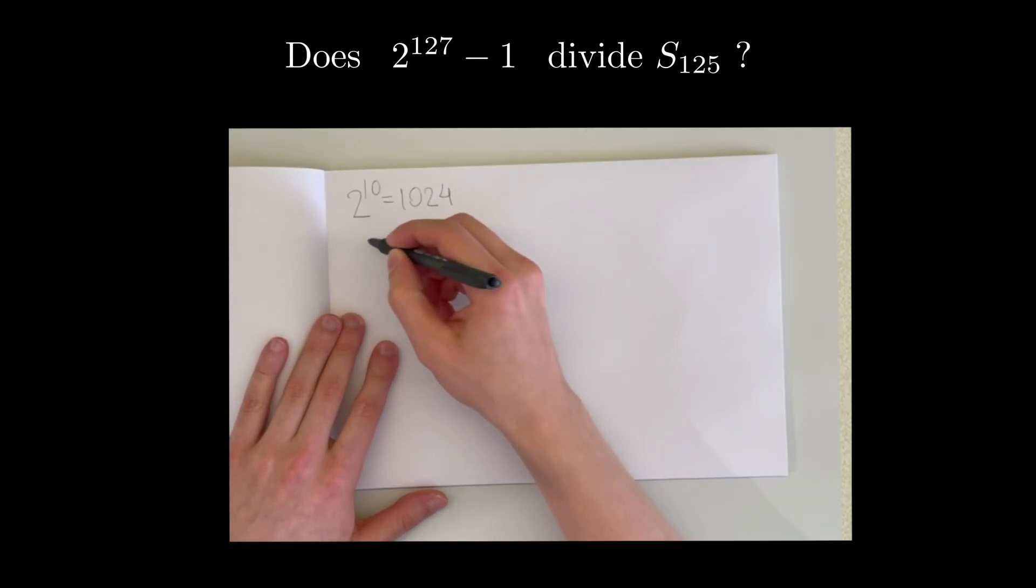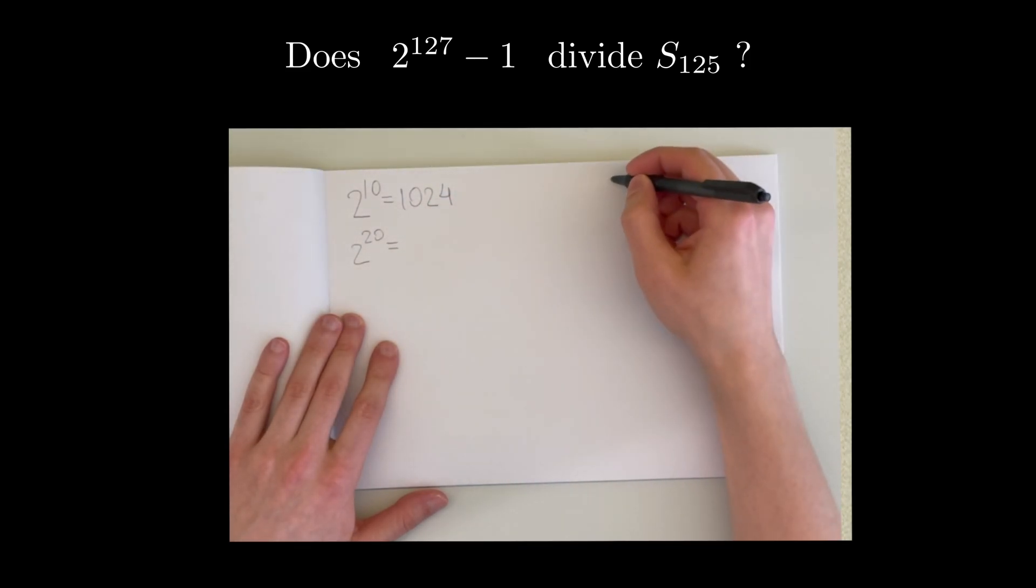So to find out whether this Mersenne number is a prime, we need to calculate it and we also need to find the 125th term of the sequence. Both of these numbers are insanely big, and I can't imagine how one could do it without a calculator.